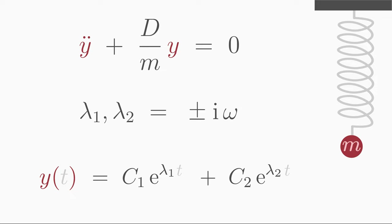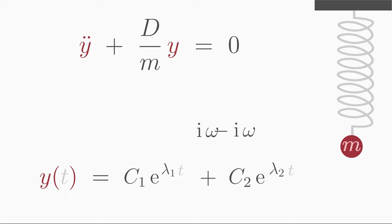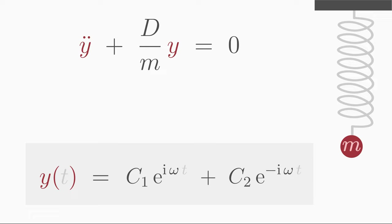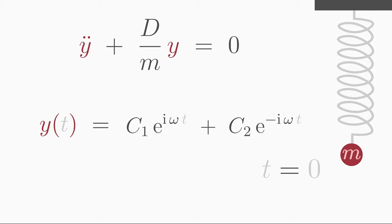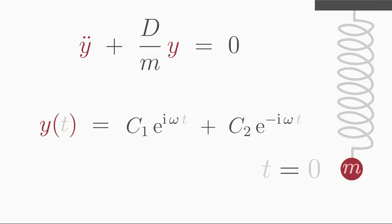Inserting the lambda values into the exponential ansatz gives the general solution for this differential equation. To determine the constants c1 and c2, we apply initial conditions. For example, at time t equals 0, the displacement of the spring was 1 — the spring was displaced to its maximum — so the initial condition is y(0) equals 1. Inserting this into the solution, since e to the power of 0 is 1, we rearrange to get c1 equals 1 minus c2.